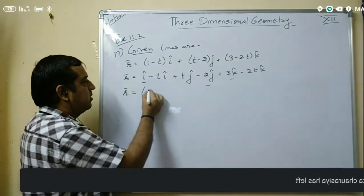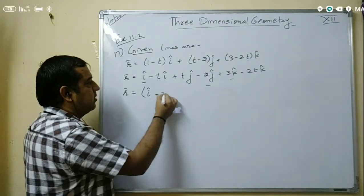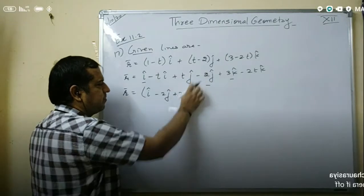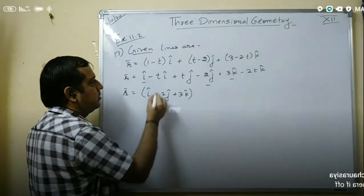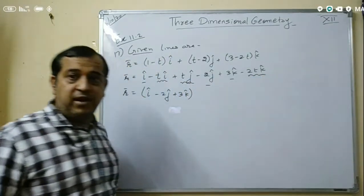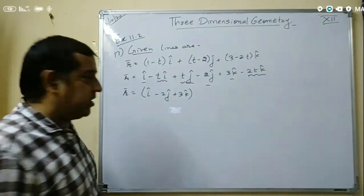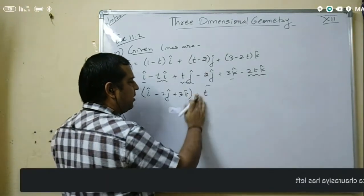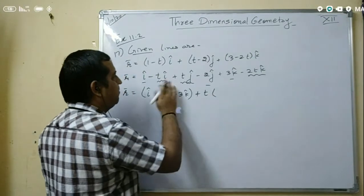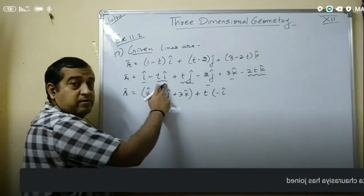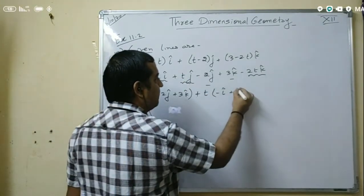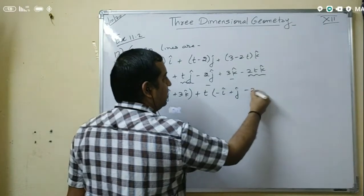So vector r becomes (i - 2j + 3k) plus t·(-i-cap + j-cap - 2k-cap). The terms with wavy lines all have t, so taking t common in the bracket you get minus i-cap, plus j-cap, and minus 2k-cap.